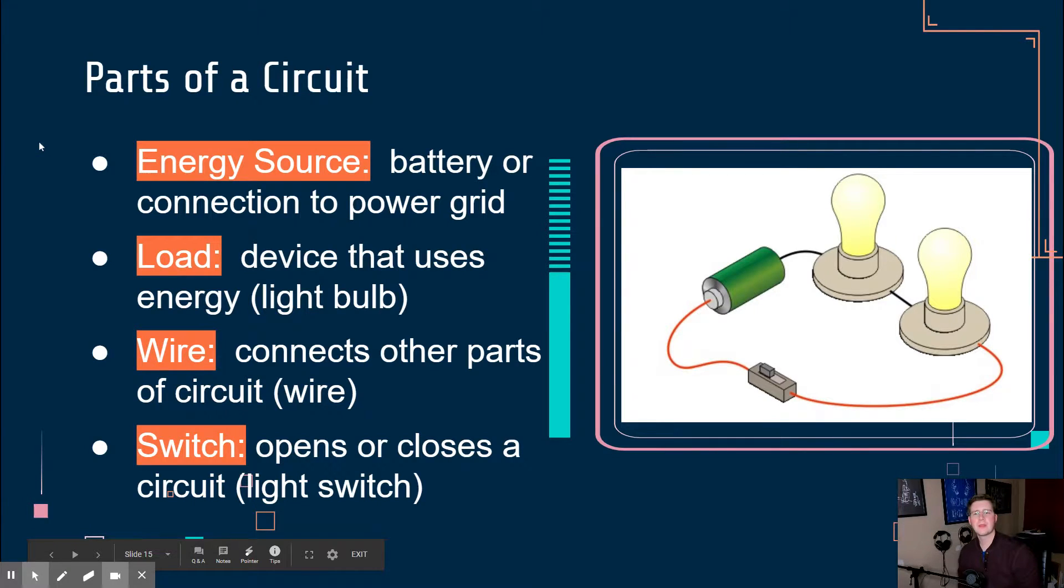So the first thing that I wanted to spend some time talking about are just what are really common items that you're going to see on a circuit. There's really four things that you're frequently going to see. One is going to be an energy source, so a battery or connection to the power grid. Some energy source, a battery being really common. You could also have a generator, something that's going to actually produce electricity to go into that circuit. And so, of course, on our image here on our right, our energy source is going to be right here.